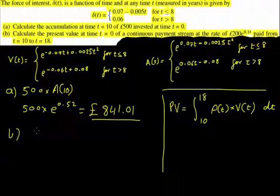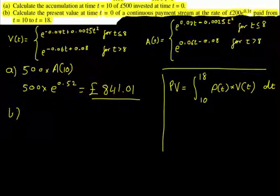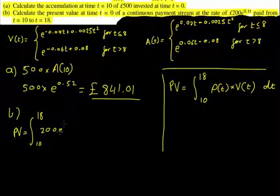So let's find that one out, so we have that integral, we're finding the present value is equal to between 10 and 18, and we know rho of t is 200 e to the 0.1t, and v of t is, well, when we're dealing with something above 8,